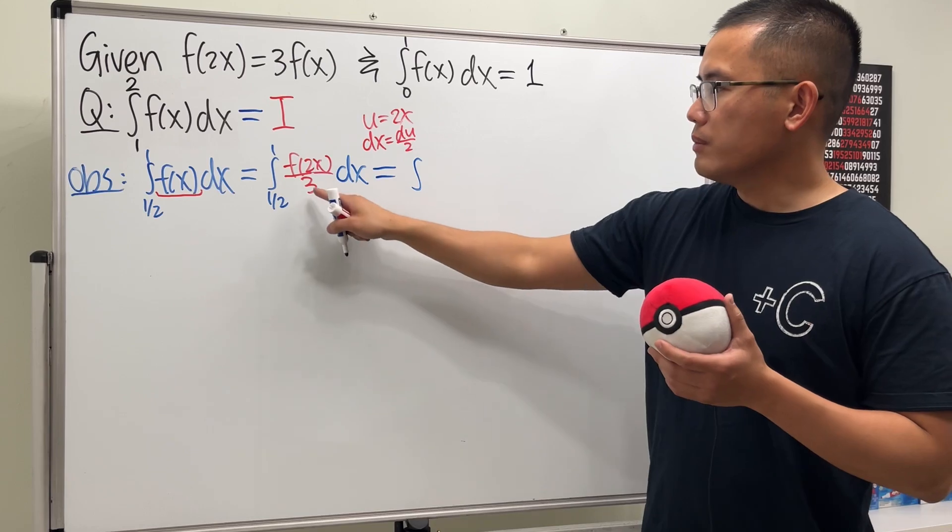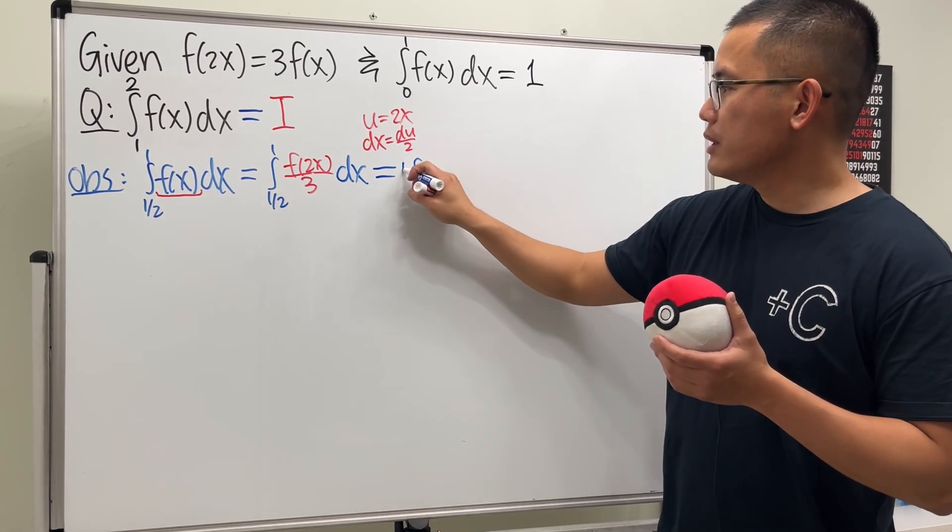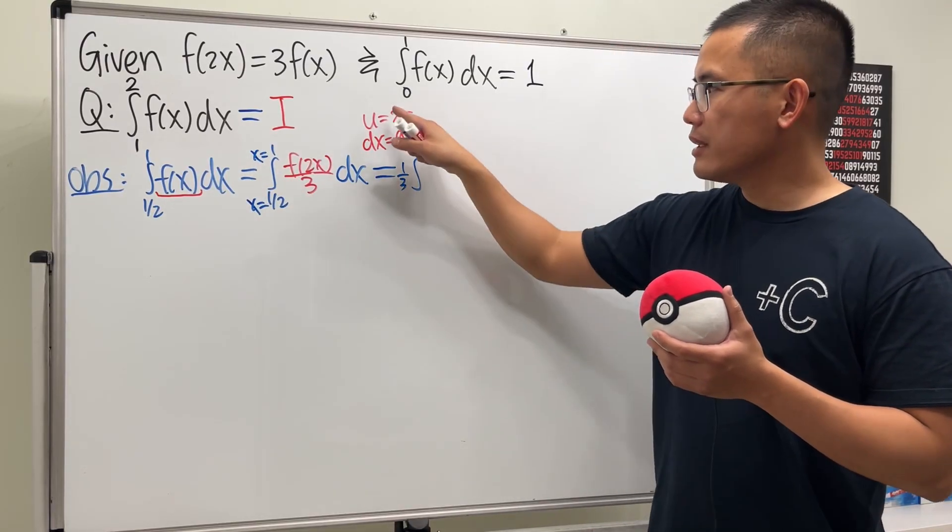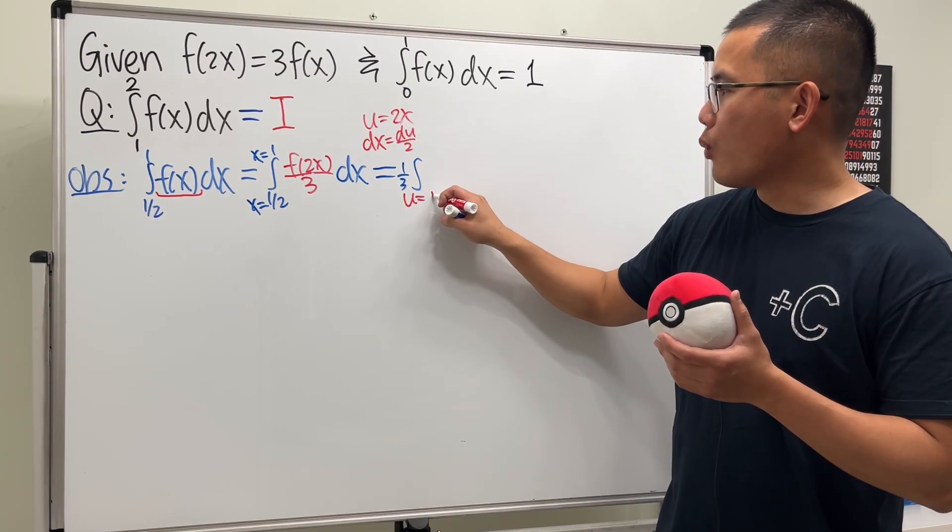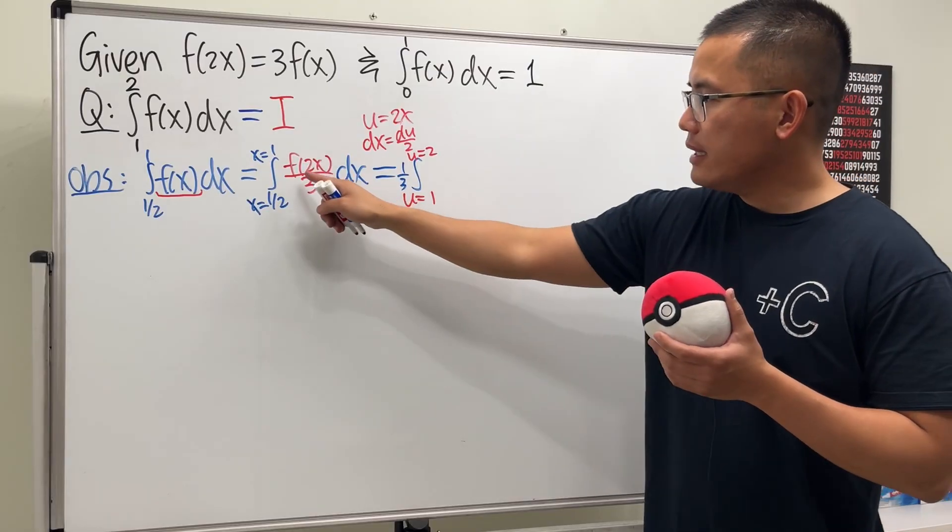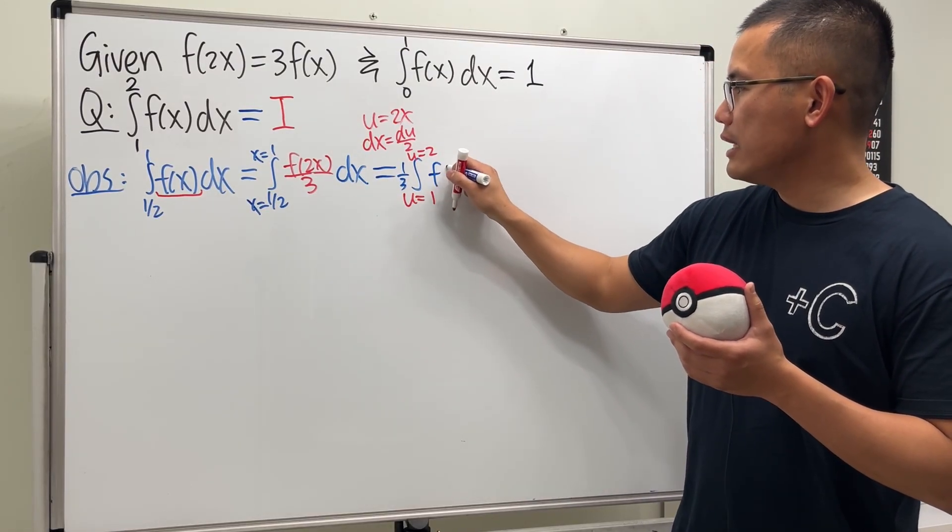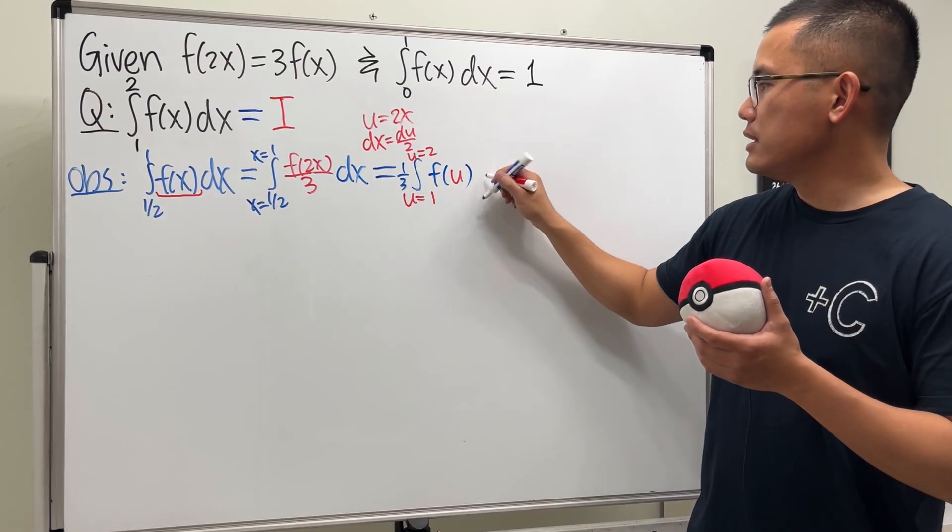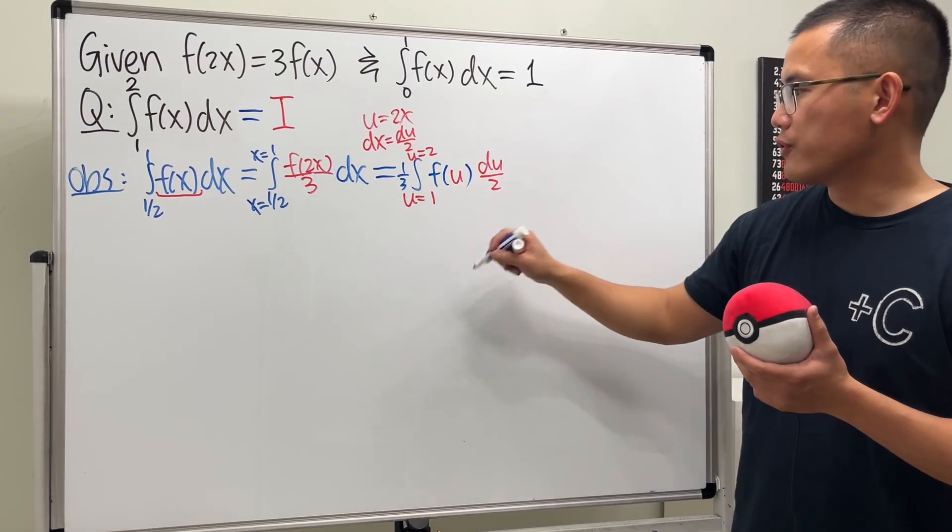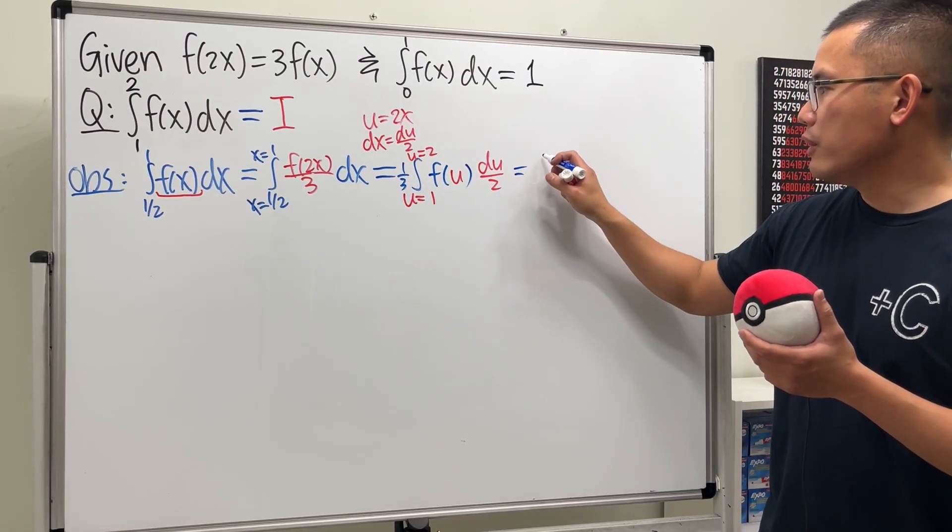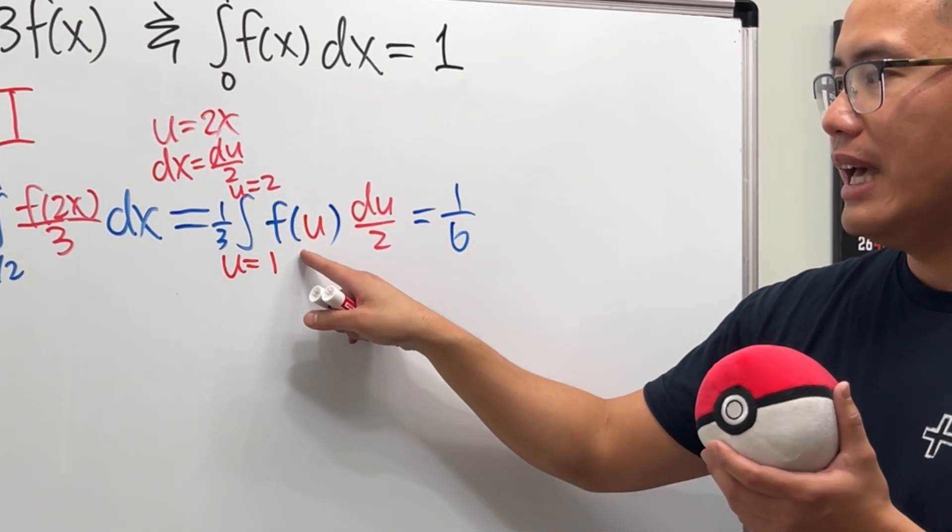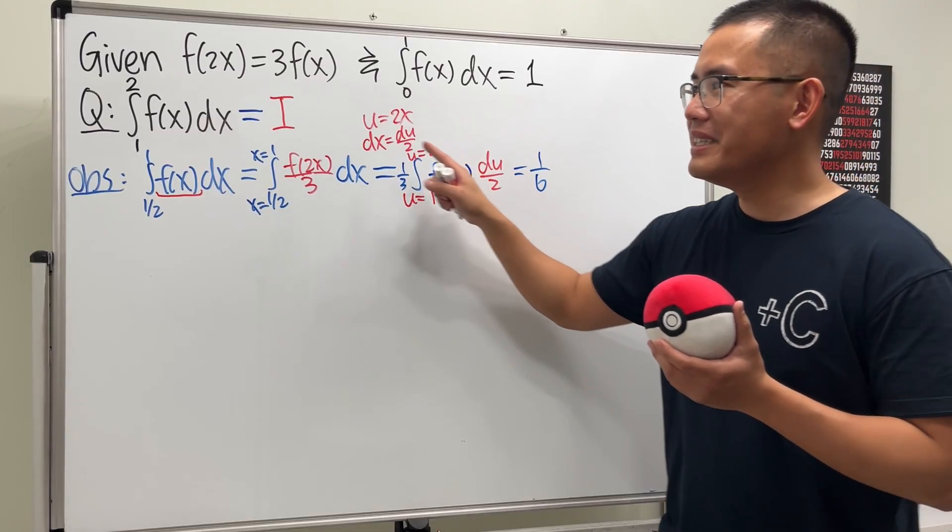Alright, so I'm going to let u equal to the inside, which is 2x. And then we can just divide the 2 on both sides, and then differentiate both sides. We can see that dx is equal to du over 2. So, the integral is going to be, here we have the 1 third, let's put it in the front. And then this is x going from 1 half to 1. After this substitution, we will just say u goes from 1 to 2. Multiply this and that by 2, and then we have f of 2x, which is now the f of u. And then the dx is just du over 2.